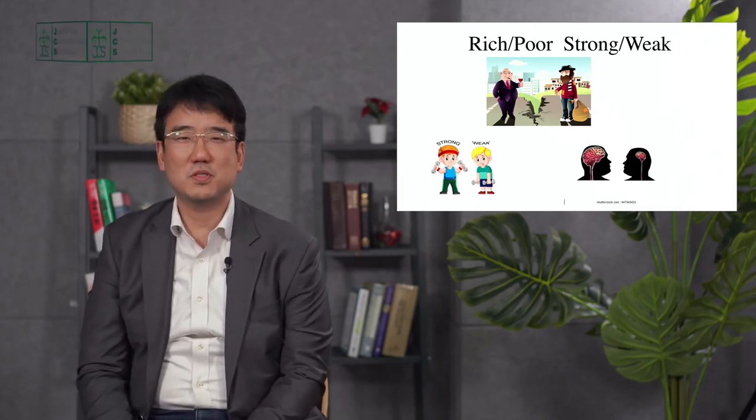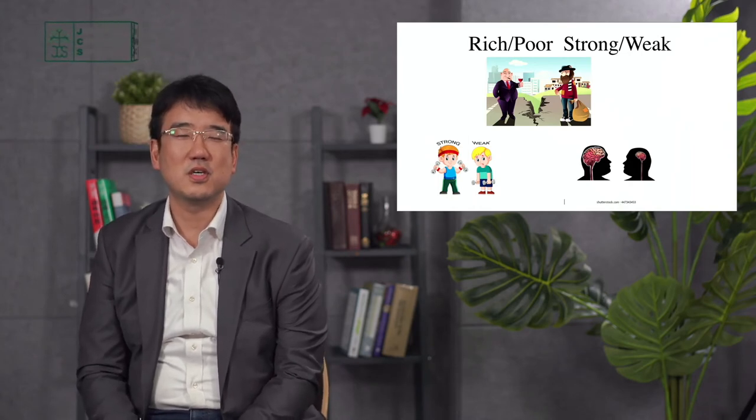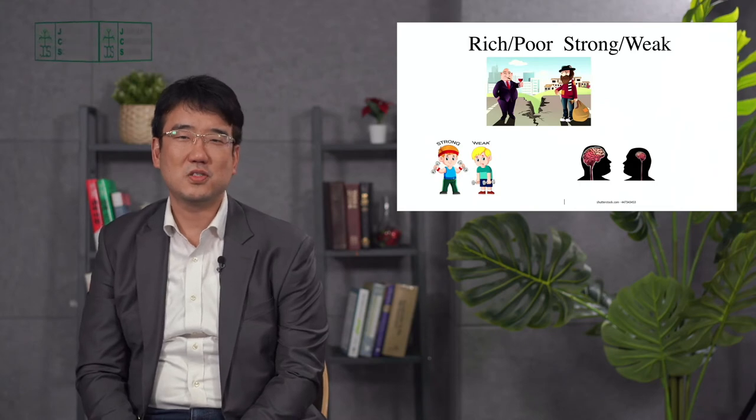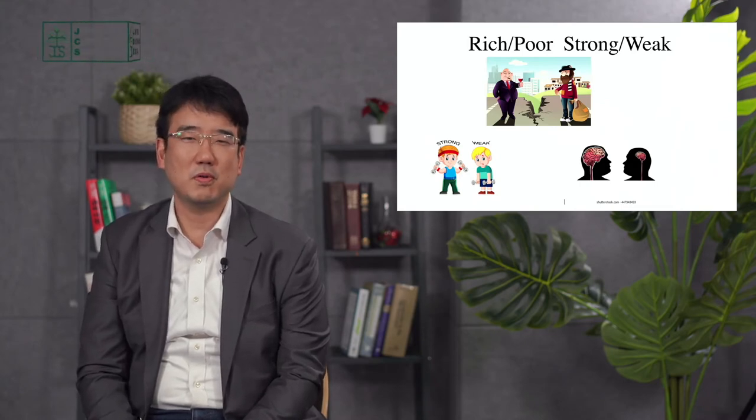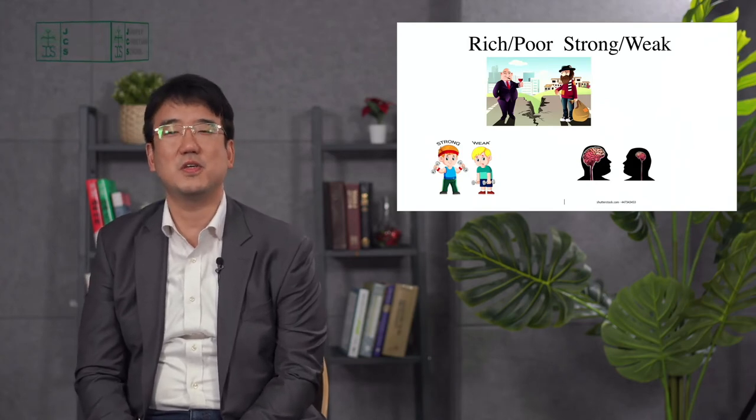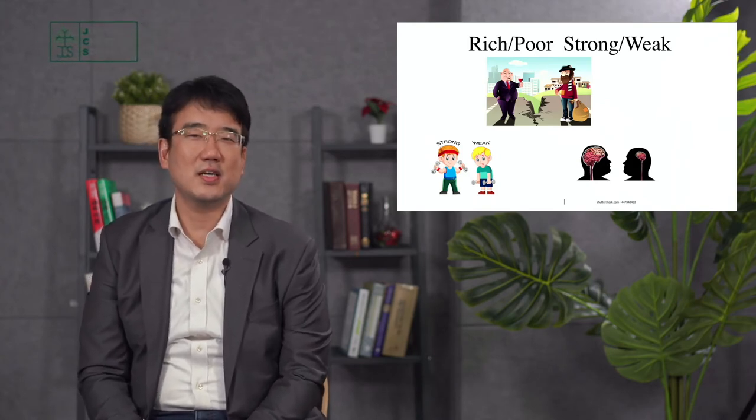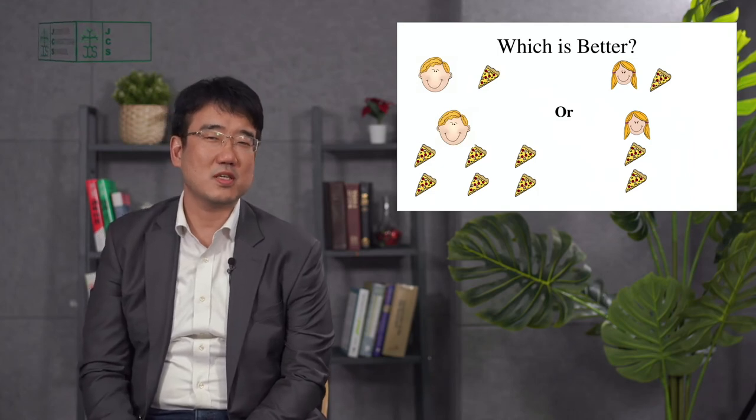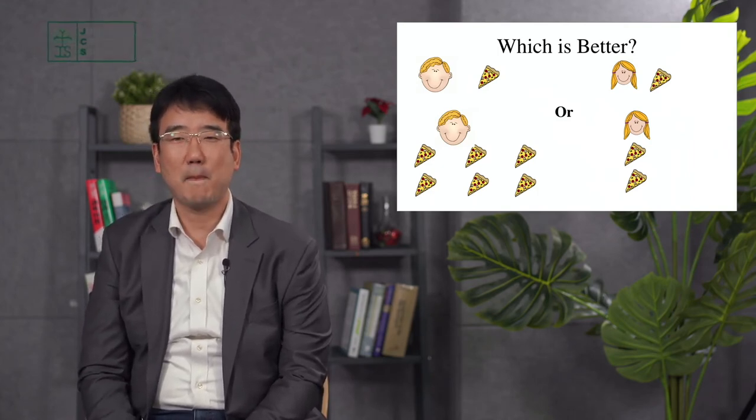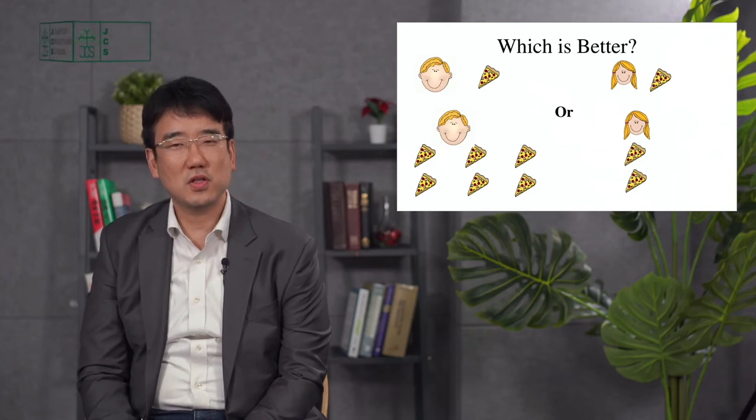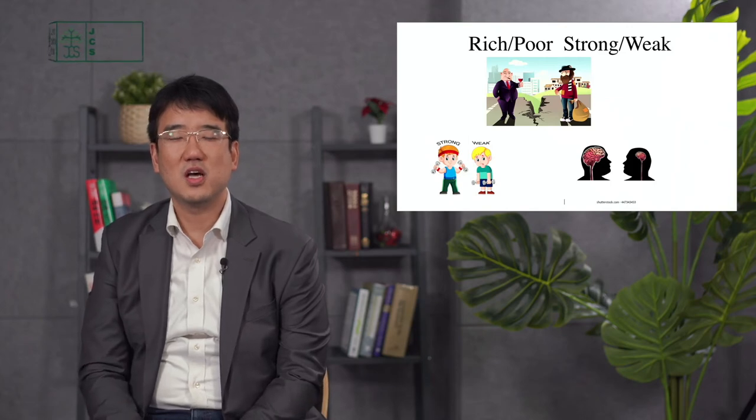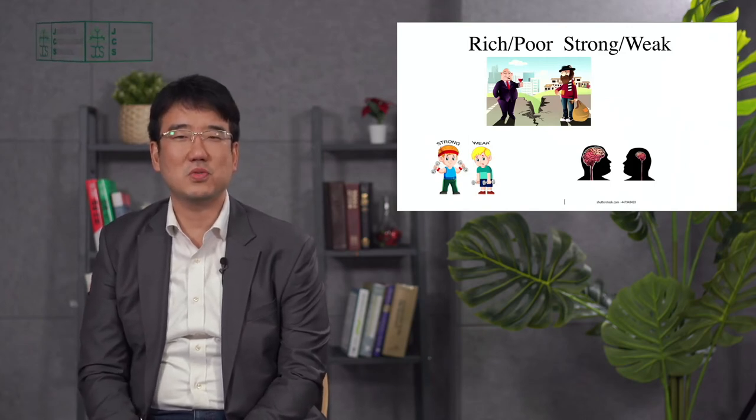So why do some people have six pizzas and why do some have two pizzas? Well, it's because in the real world we have rich people and poor people and strong people and weak people and smart people, not as smart people. So that's why some people end up with six pizzas and some people have two pizzas. And that's just everyone knows that's how the world is. But why did it become this way?